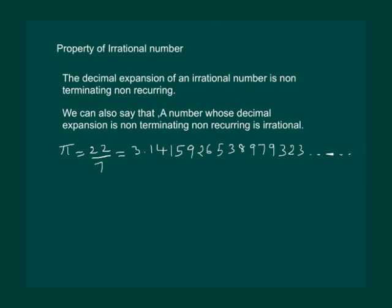Hence it is an example of an irrational number. Another example can be root 2, which will give you 1.414213562373 and so on. It is also non-terminating non-recurring, hence root 2 is also an irrational number.